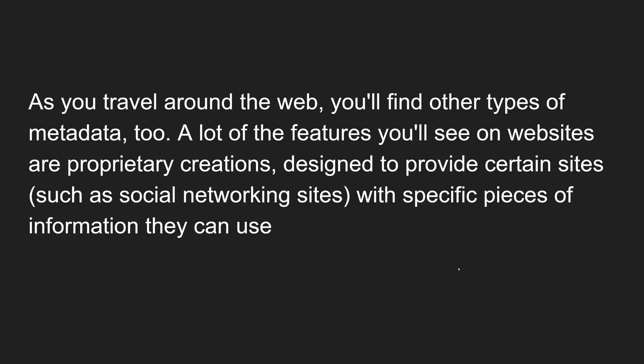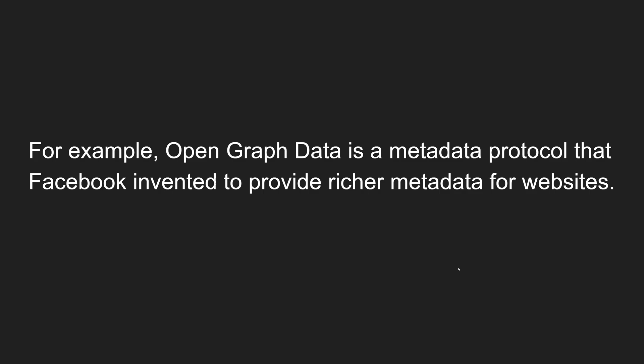As you travel around the web you will also find other types of metadata. A lot of the features you'll see on websites are proprietary creations designed to provide certain sites, such as social networking sites, with specific pieces of information they can use. For example, you can see Open Graph data with og:title - this kind of metadata appears in some web page heads.